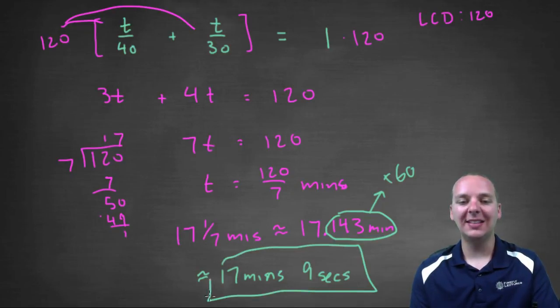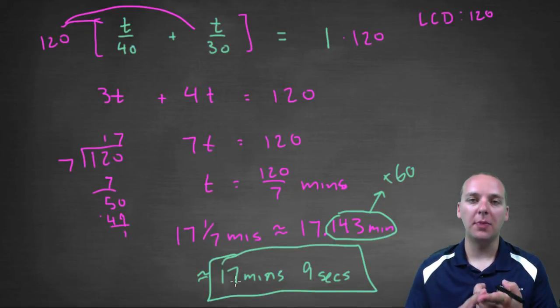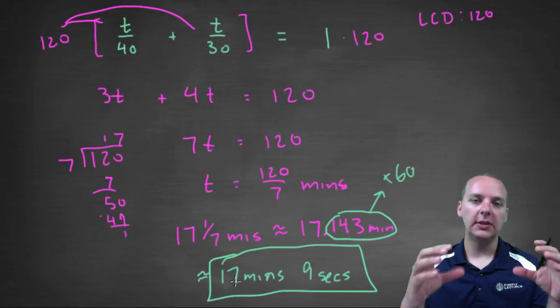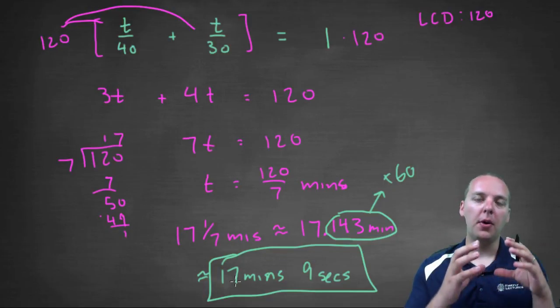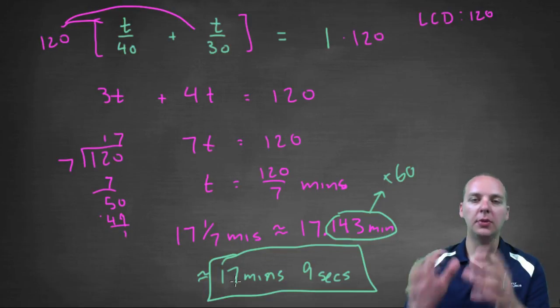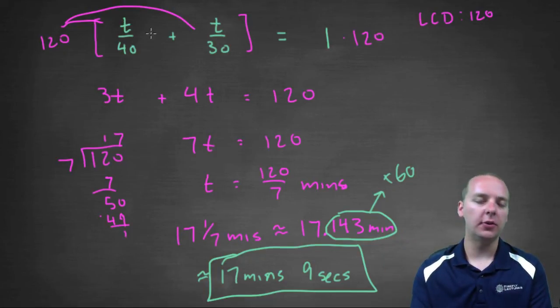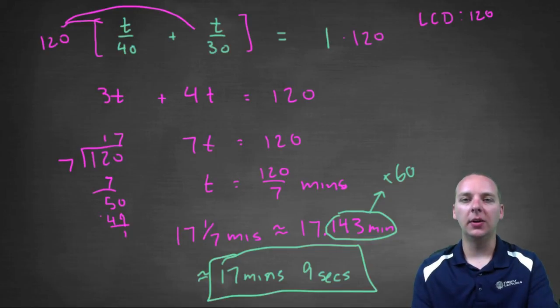So that makes sense. That's faster than Mark by himself, it's faster than Melissa by herself. So anyways, that's how you do these work rate problems. You set up the chart, figure out the part that person A can do, person B can do, add them together to equal one whole task, and then solve for T or solve whatever it is that you happen to be looking for. So anyways, hopefully that makes these work rate problems a little bit more clear. We'll see you later.